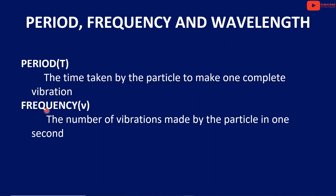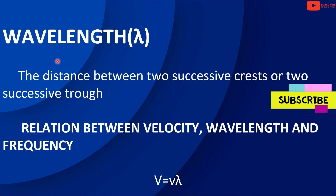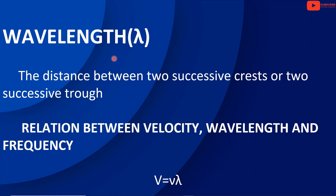The frequency, represented by nu, is the number of vibrations made by the particle in one second. The wavelength, represented by lambda, is the distance between two successive waves. The relationship between velocity, frequency, and wavelength is: v equals nu times lambda.